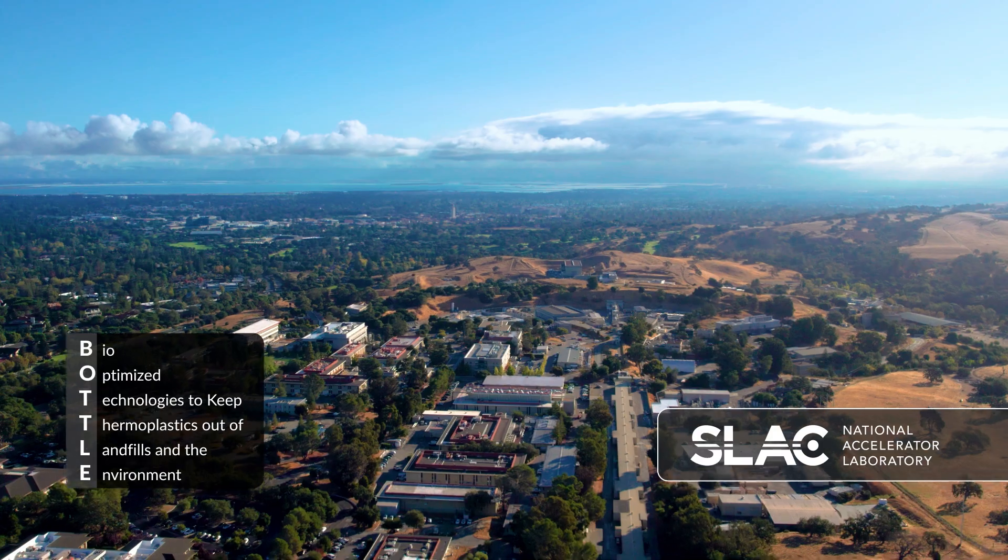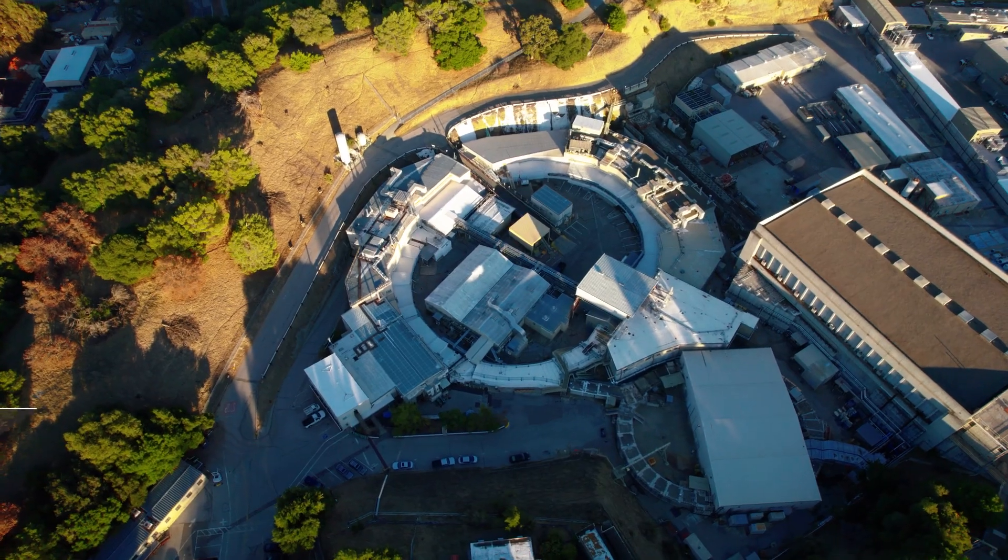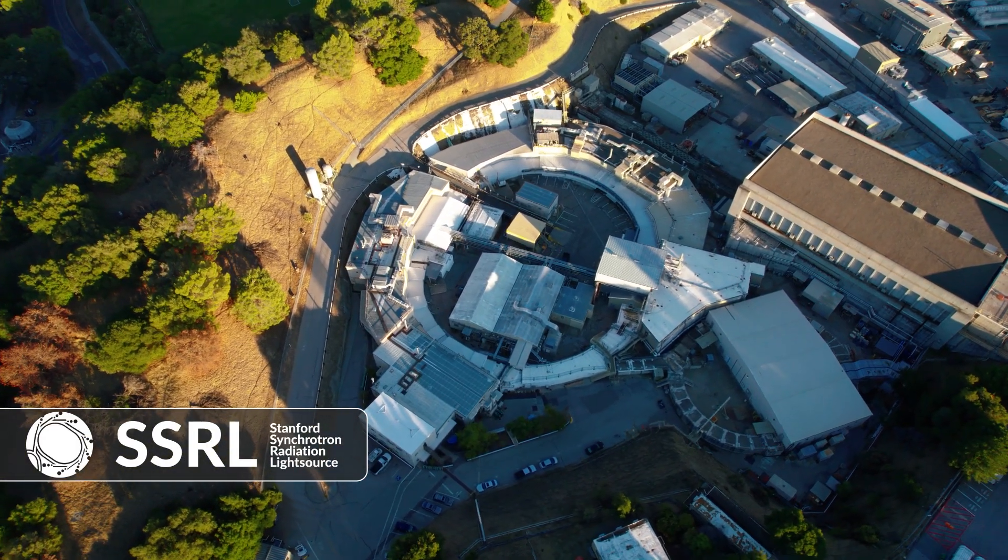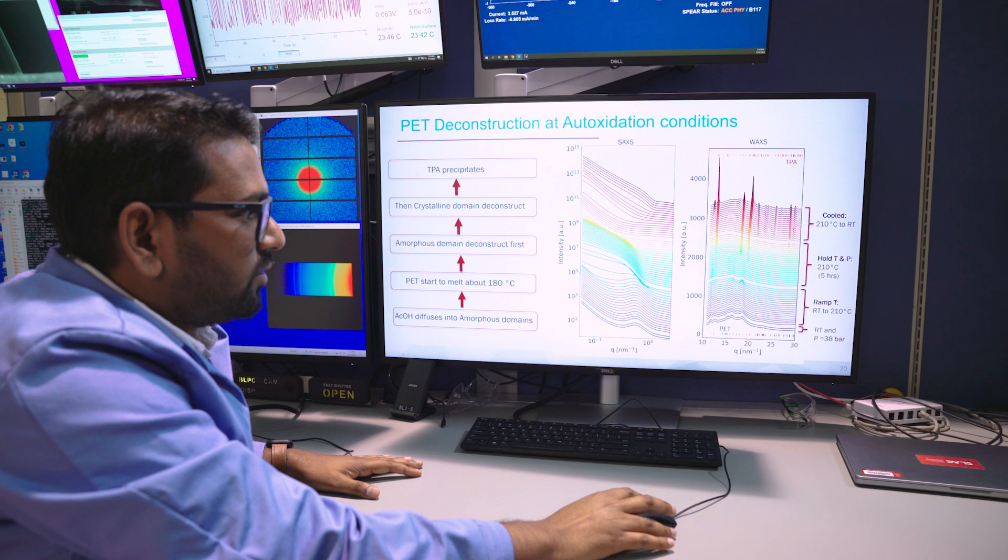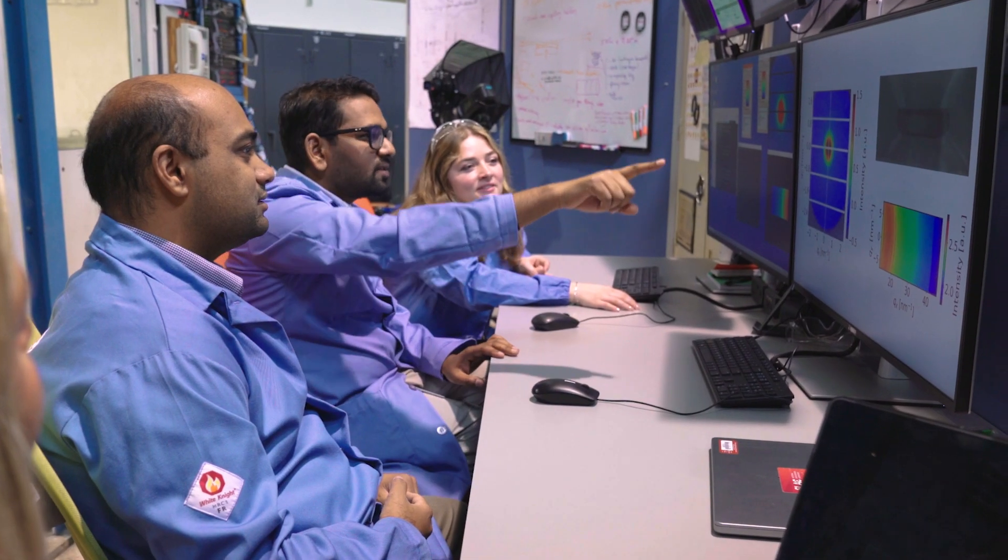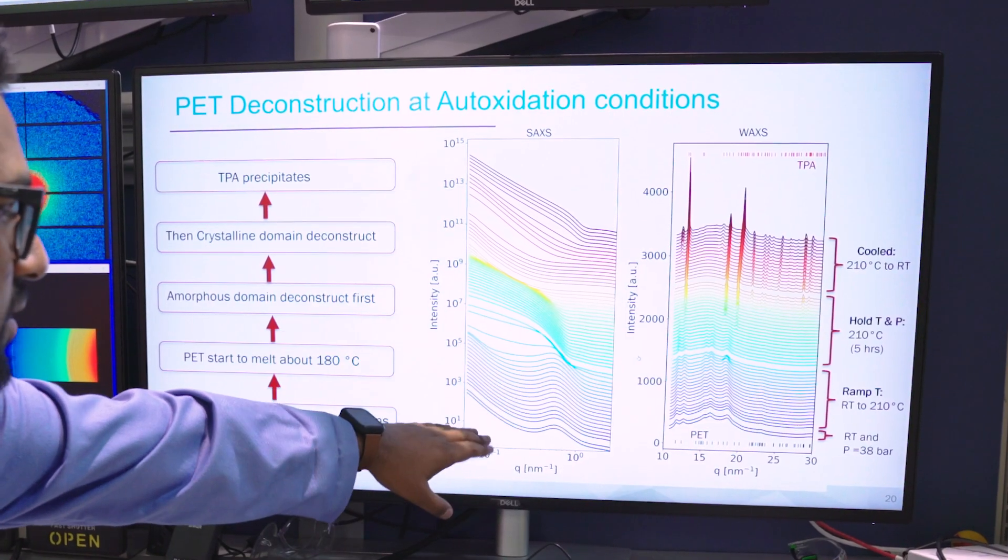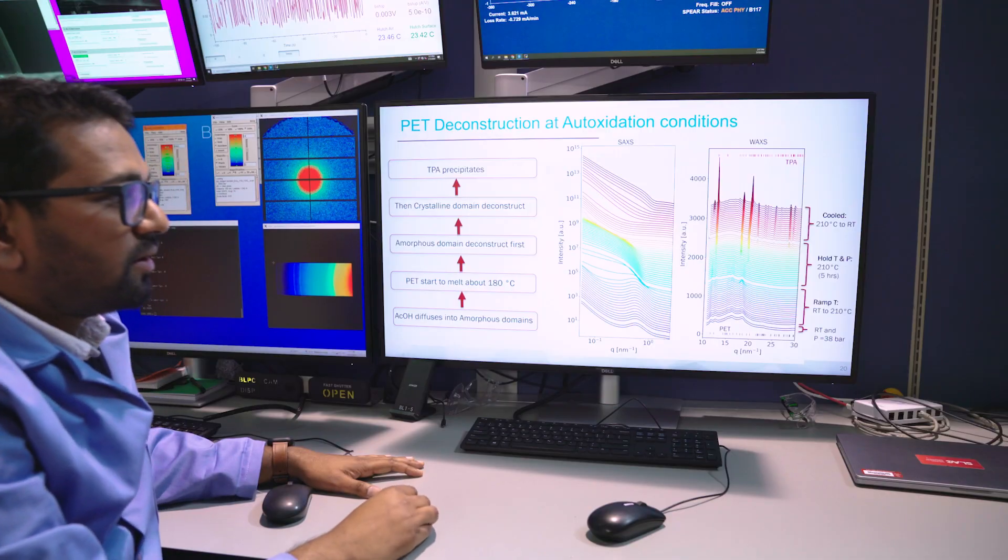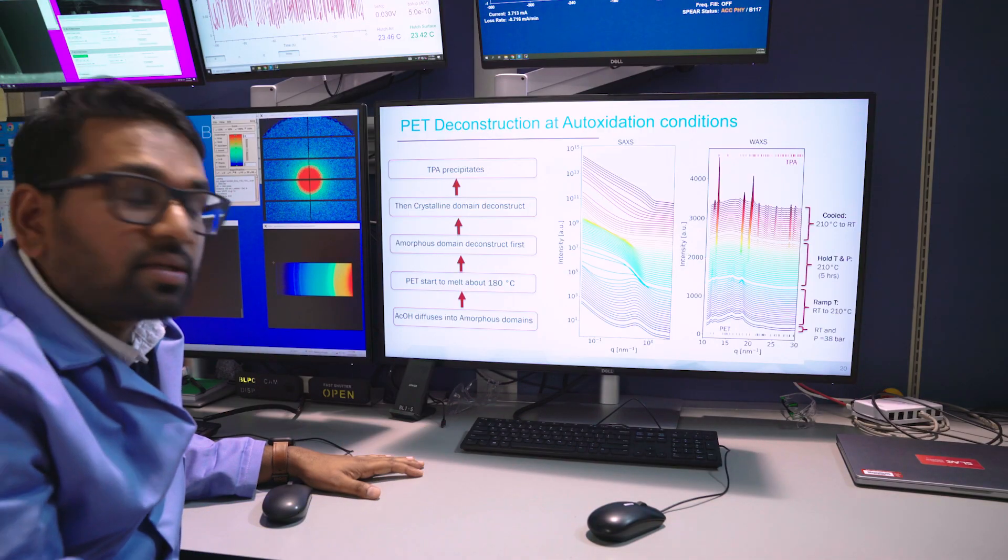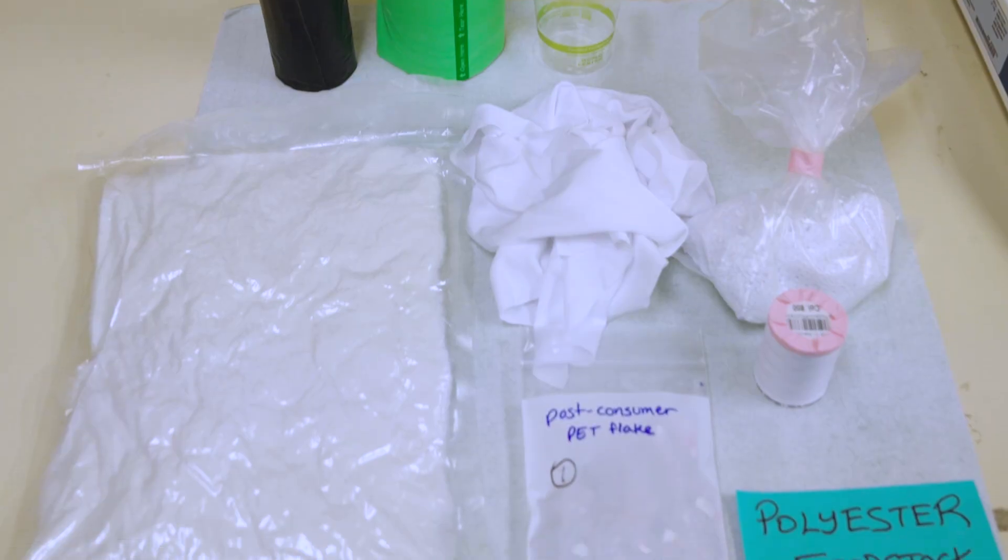Here at SLAC, as part of the Bottle Consortium, we work with our partners on developing advanced chemical and biological processes for breaking plastics back down to their chemical building blocks, so that we can recycle many more types of plastics and the products that are made from them. We're also developing Tomorrow's Plastics, which are designed to be both recyclable and biodegradable.